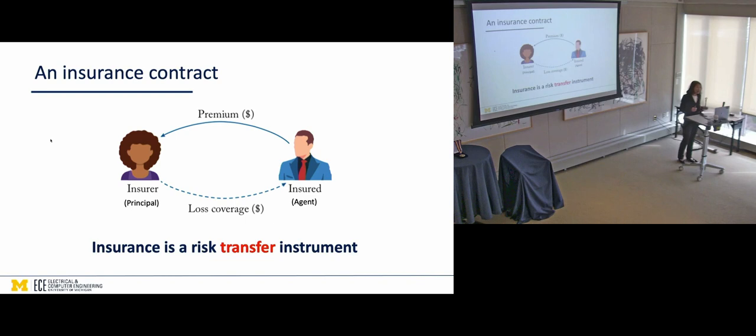One thing that's interesting, important to note, is insurance is fundamentally a risk transfer instrument. The risk hasn't gone down. You think about the marine insurance. Whatever the risk there is remains the same. It's just that I pay you money so you now have the risk. I don't have to worry about the risk. In the cybersecurity domain, what interests us has always been, can I use this as a risk reduction mechanism, not just a transfer mechanism?